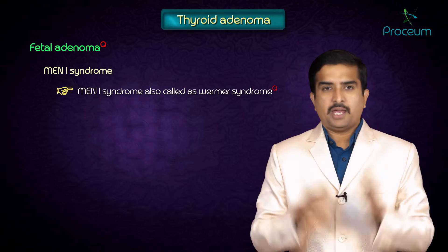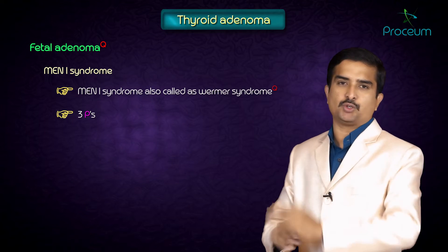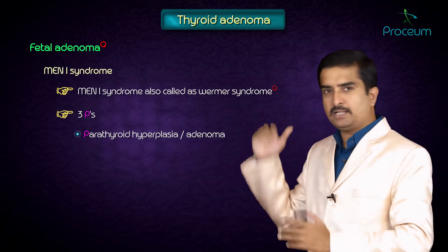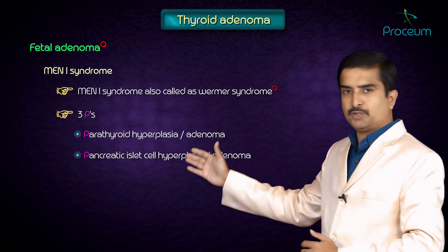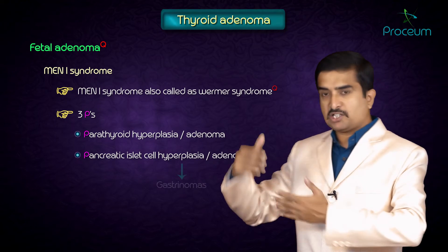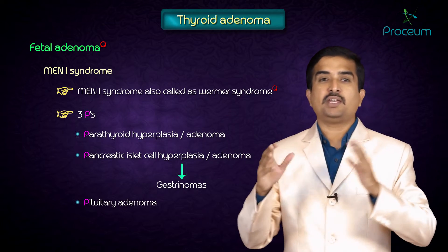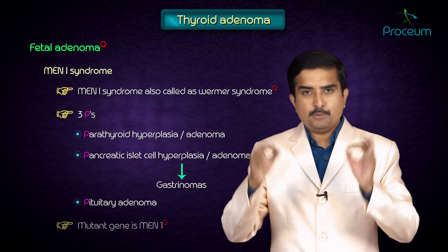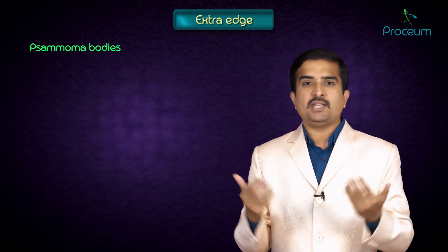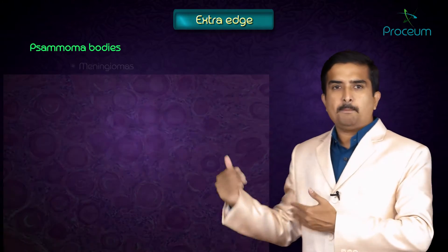MEN1 syndrome is also called Wermer syndrome. The three P's to identify for MEN1 are: first, parathyroid hyperplasia or adenoma; second, pancreatic islet cell hyperplasia or adenoma leading to gastrinomas; and third, pituitary adenoma. The mutant gene is MEN1. Psammoma bodies are seen in papillary carcinoma of the thyroid, meningiomas, and serous cystadenoma of the ovary.